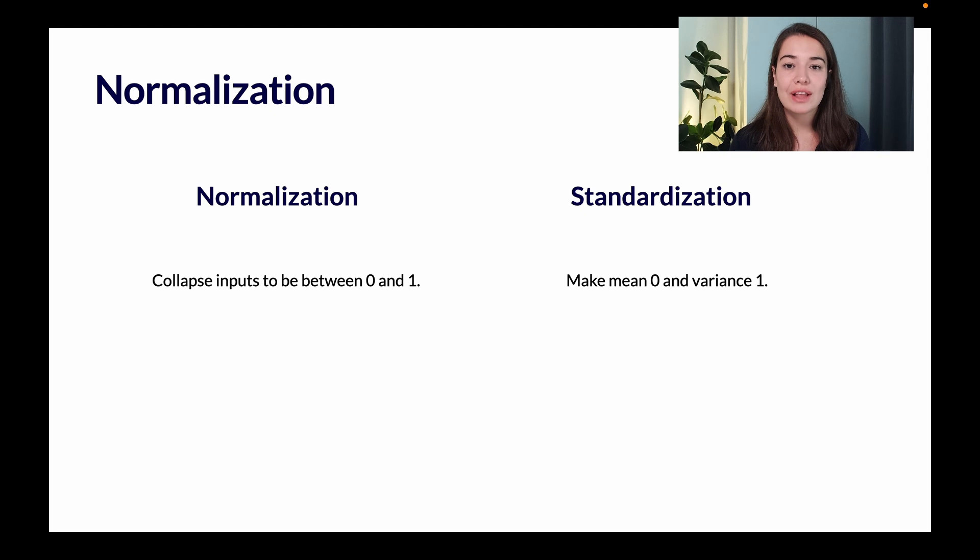Normalization is collapsing the input range that you have to be between zero and one, whereas standardization is changing your values so that their mean equals to zero and their variance or standard deviation equals to one.